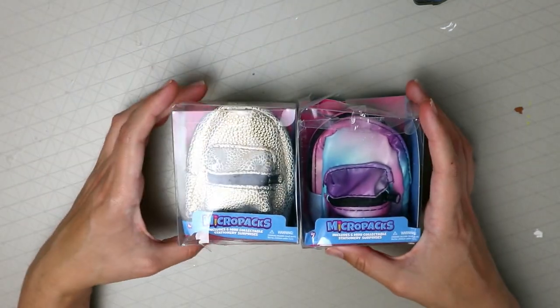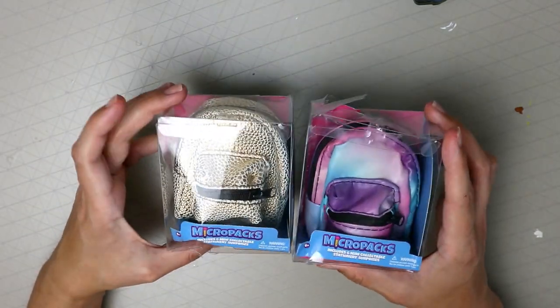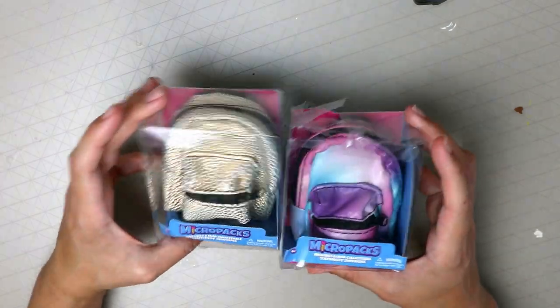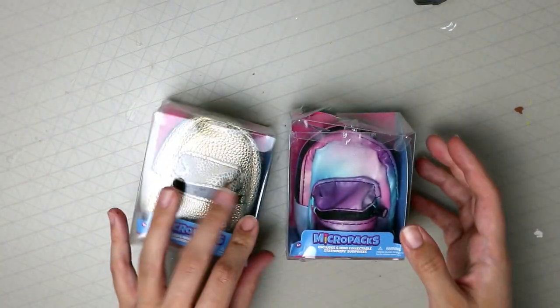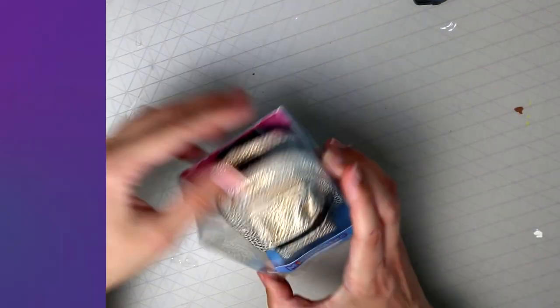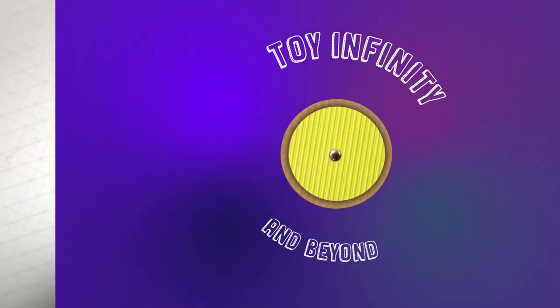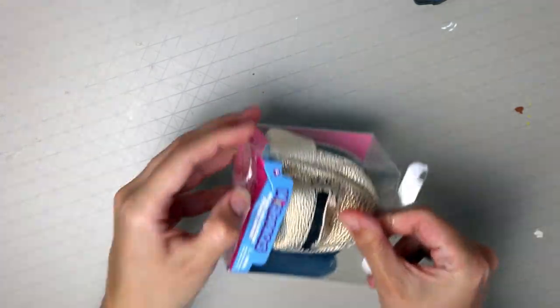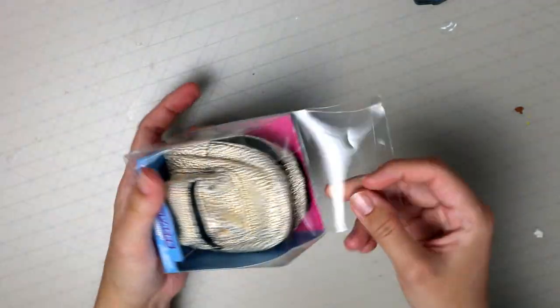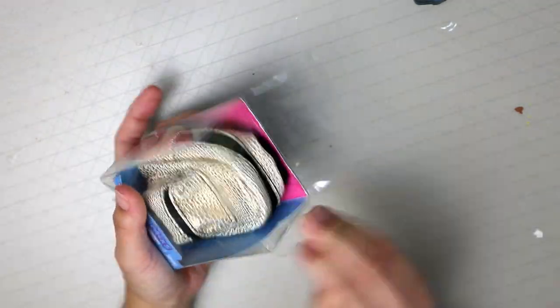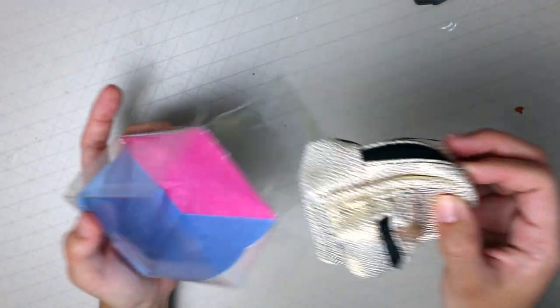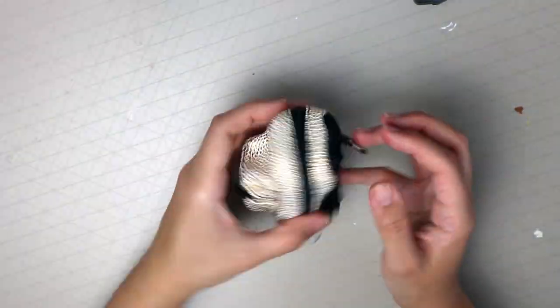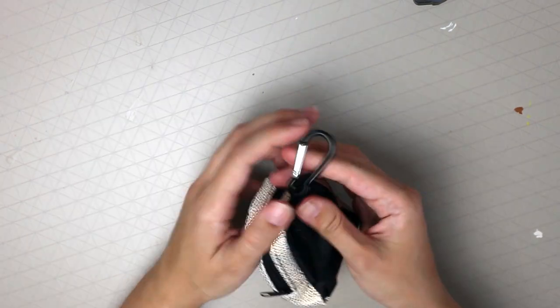So there's eight in total and I got two at random. These are the colors I got. I'm gonna open up this one first. They actually came like this, the box wasn't very well packaged. Hopefully the items inside are okay. It comes with this clip so you can clip it onto anything, even your real backpack.